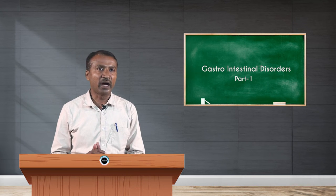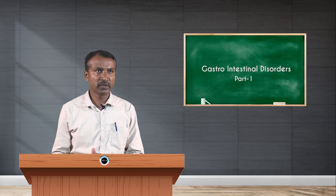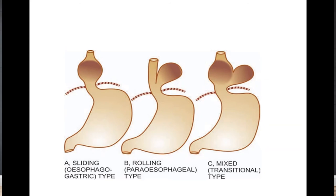There is a term called hiatus hernia, which is the herniation or protrusion of part of the stomach through the esophageal hiatus of the diaphragm. Esophageal hiatal hernia is the cause of diaphragmatic hernia in 98% of cases and is diagnosed radiologically in about 5% of cases. There are different types: sliding esophageal-gastric type, rolling (para-esophageal) type, and mixed (transitional) type.